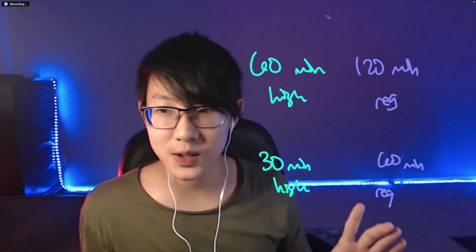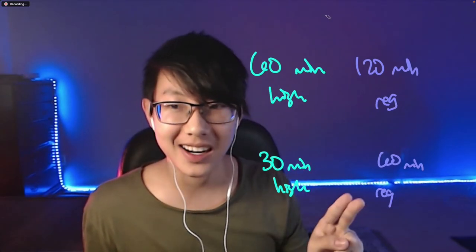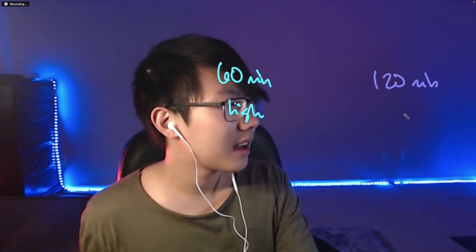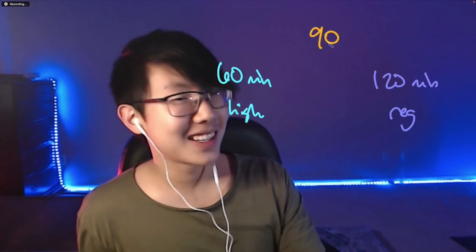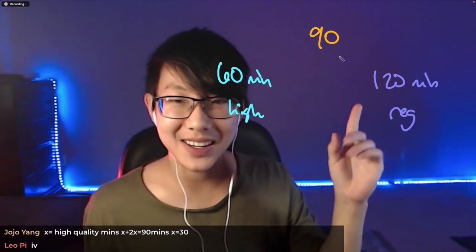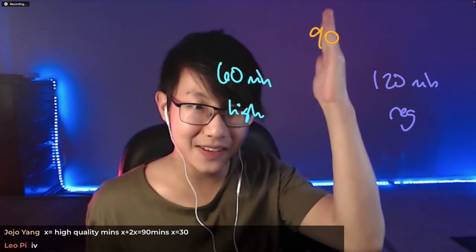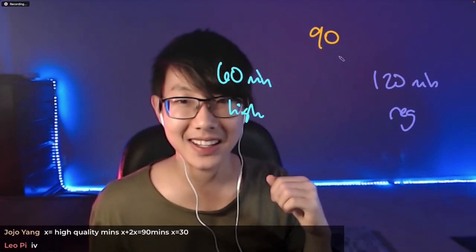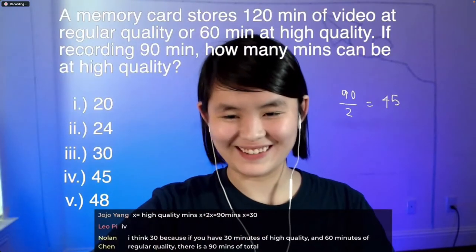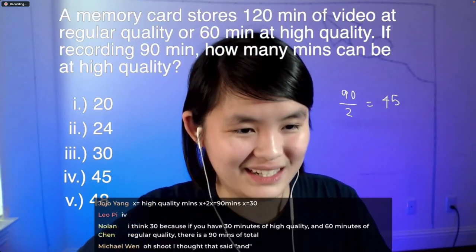I see a lot of answer choice three. The second most common is answer choice four, which is also interesting. Because if you look at it, the numbers given in the problem are 60 minutes of high quality and 120 minutes of regular quality, and it asks for 90 minutes total. So 90 is smack dab in the middle — it might be tempting to go with exactly half of the 90 each way, for an answer of 45. But that doesn't end up working out. Maybe we should have Professor Lowe explain why.